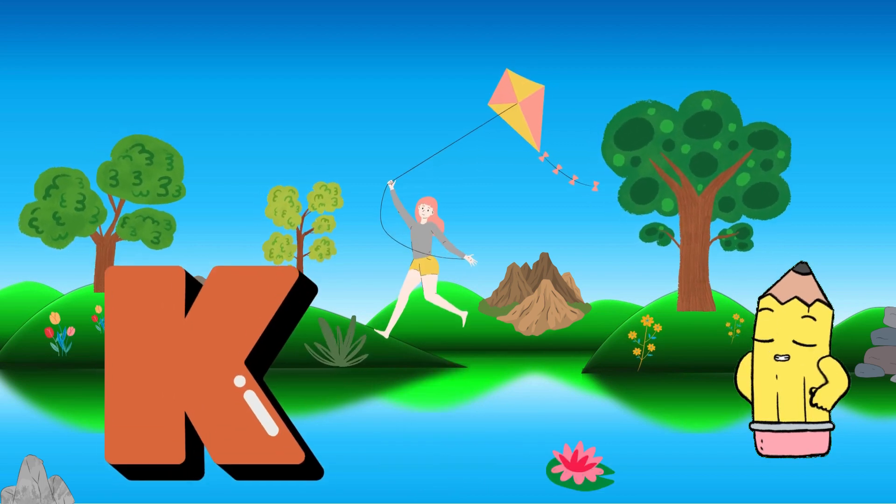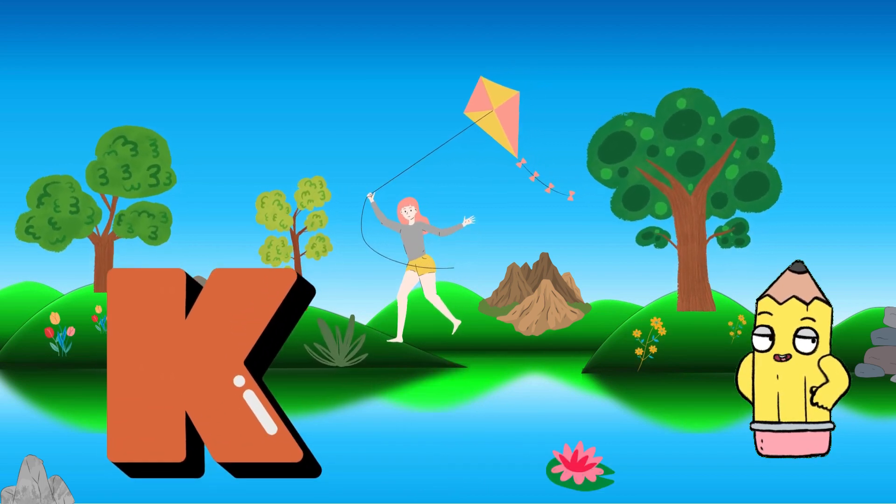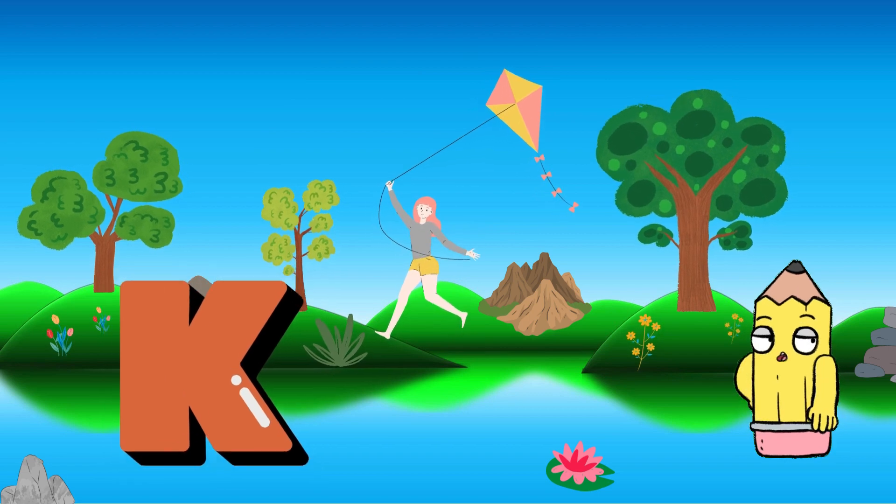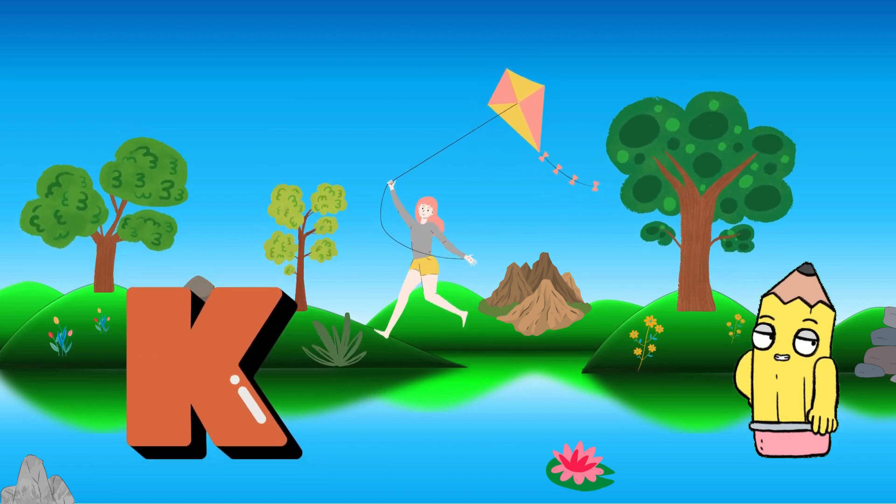Our quest resumes with the letter K. Can you say it with me? K is for Kite, floating high above us in our alphabet play.